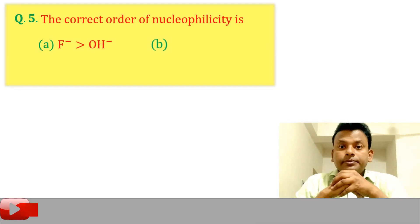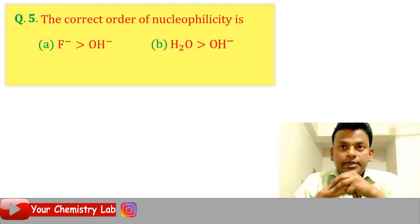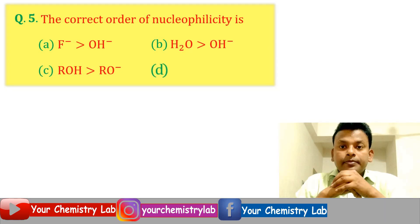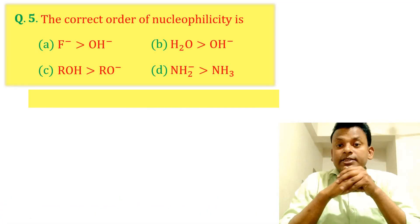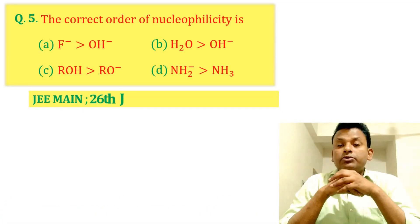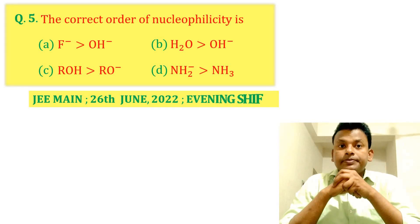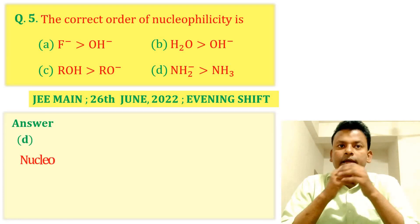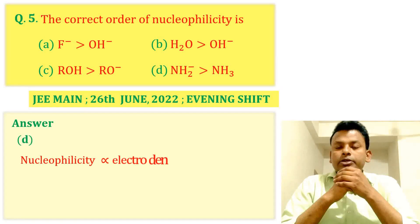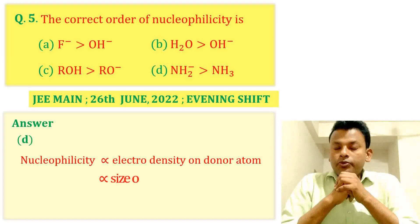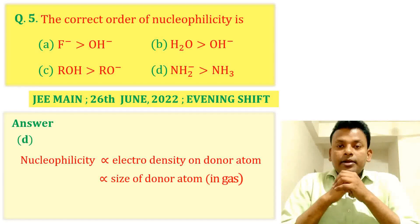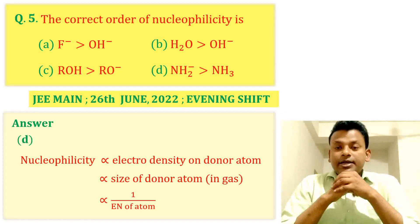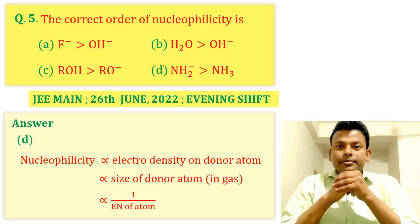Question 5: The correct order of nucleophilicity is which option? This question was set in 26th June 2022 Evening Shift. Answer: Option D is correct. Nucleophilicity is directly proportional to the electron density of the donor atom, directly proportional to the size of the donor atom in the gas phase, and directly proportional to 1/electronegativity of the atom.